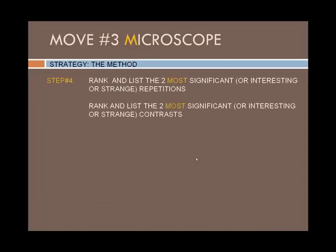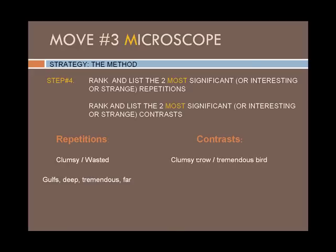As with notice and rank, we're now going to pull out the two most significant, interesting, or strange repetitions from our previous list and the two most significant, strange, or interesting contrasts. Here is what we came up with. For repetitions: 'clumsy,' 'wasted,' 'gulfs,' 'deep,' 'tremendous,' and 'far.' For contrasts: 'clumsy crow' versus 'tremendous bird,' and 'saw' versus 'dream.'